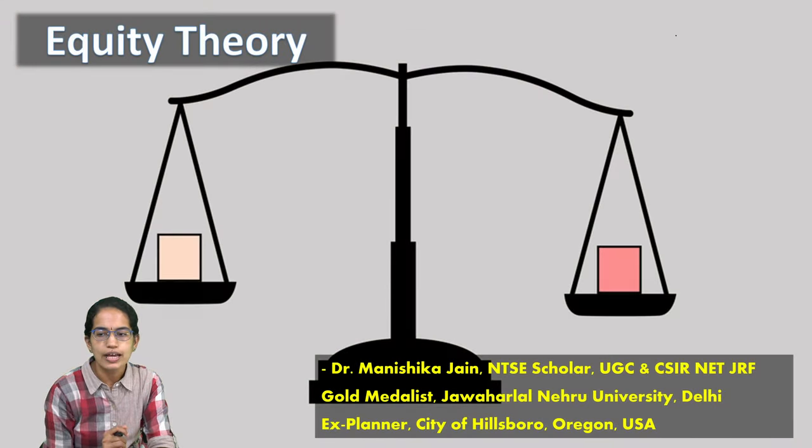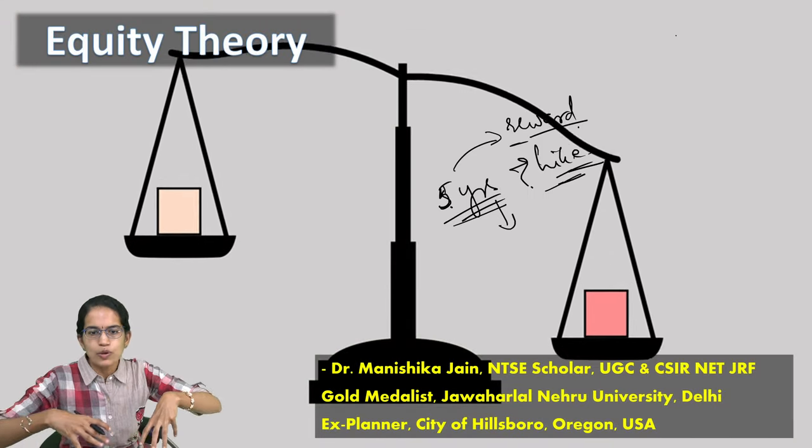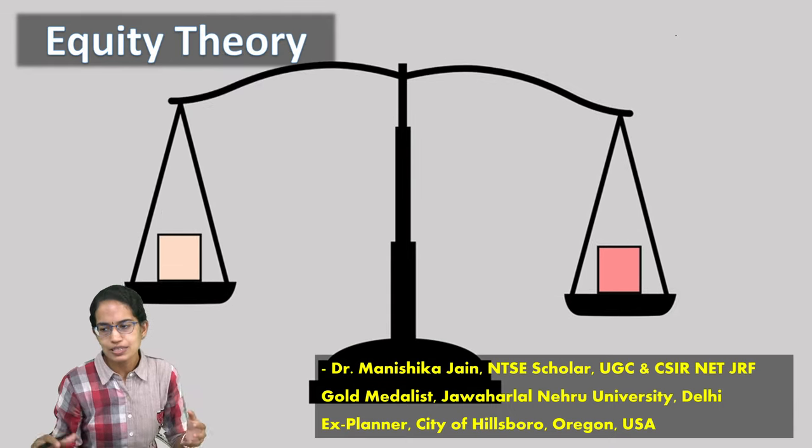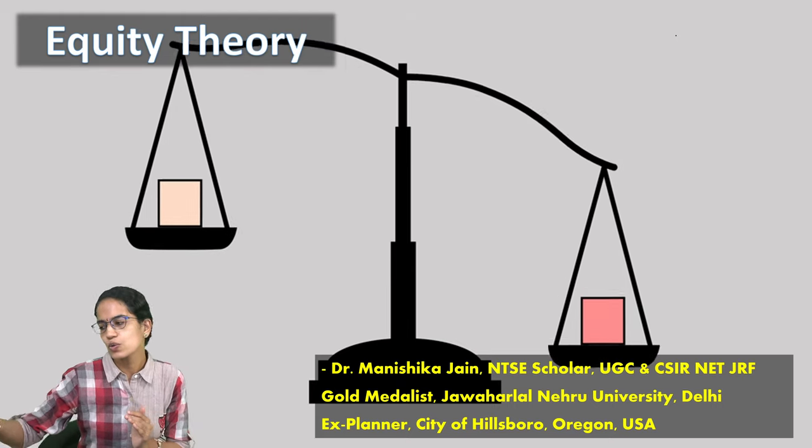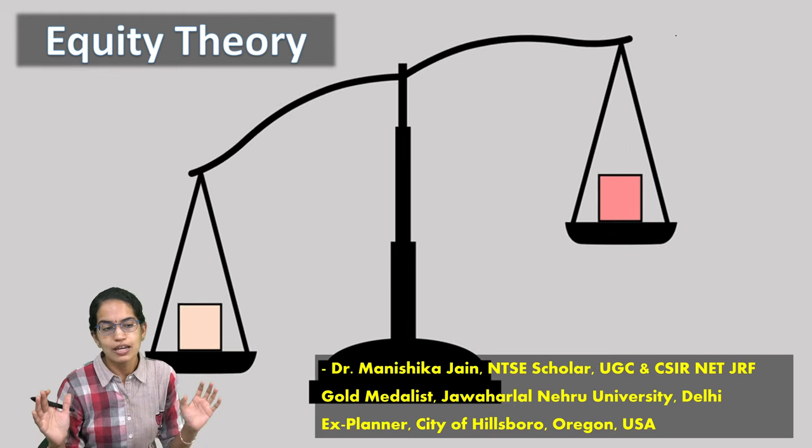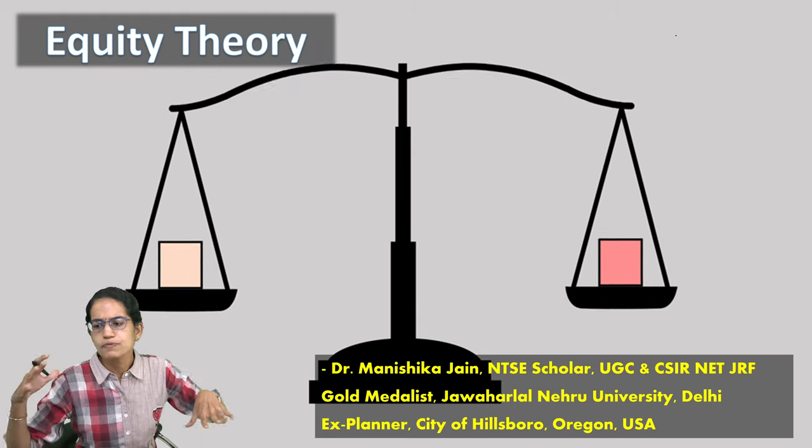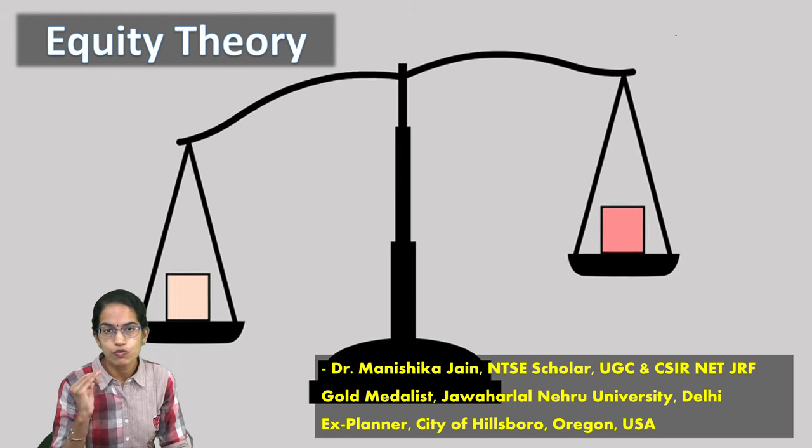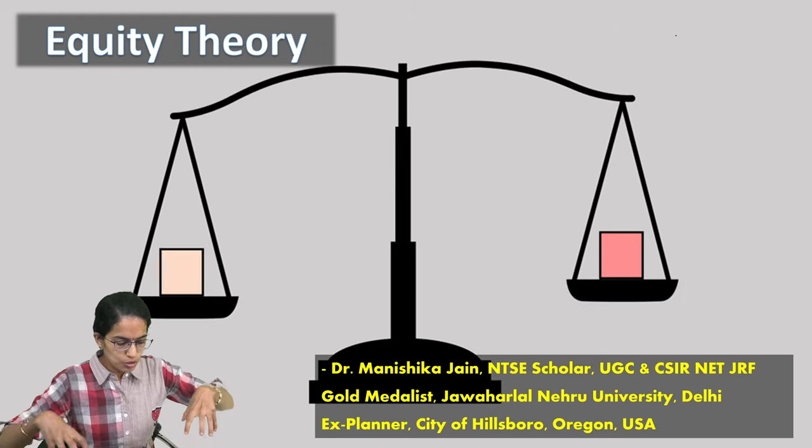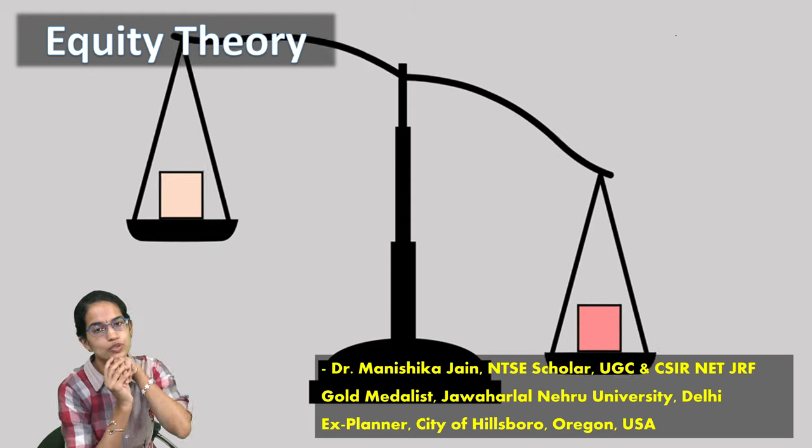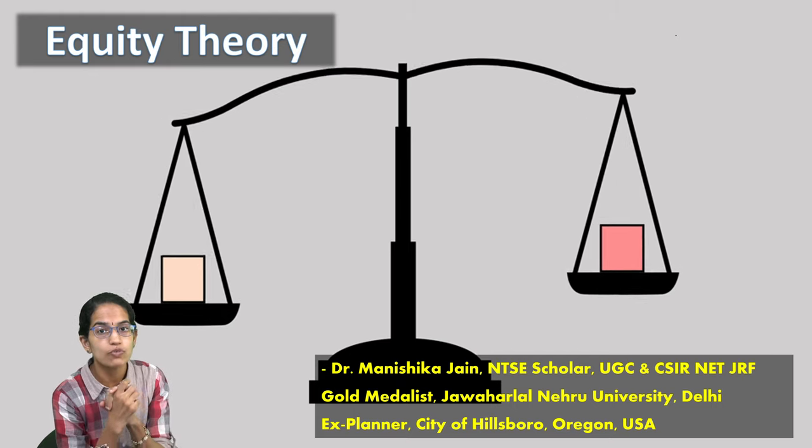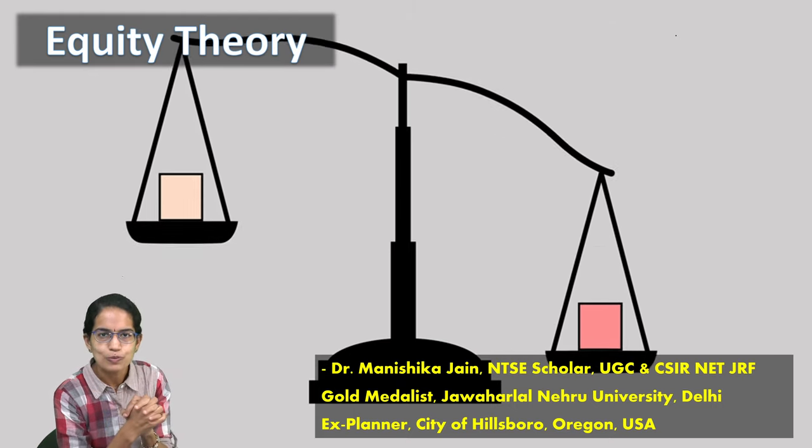This equity theory basically explains how we can perfectly manage the things, the inputs versus the outputs. Input-output must be balanced and this balanced input-output would lead to higher productivity. If there is an imbalance between input and output, this would create a difference in the perception and therefore, inter-group relations would be affected. As a group, if you need to progress, the inputs and the outputs must be balanced decently and that is how equity theory works on the balance of inputs and outputs.